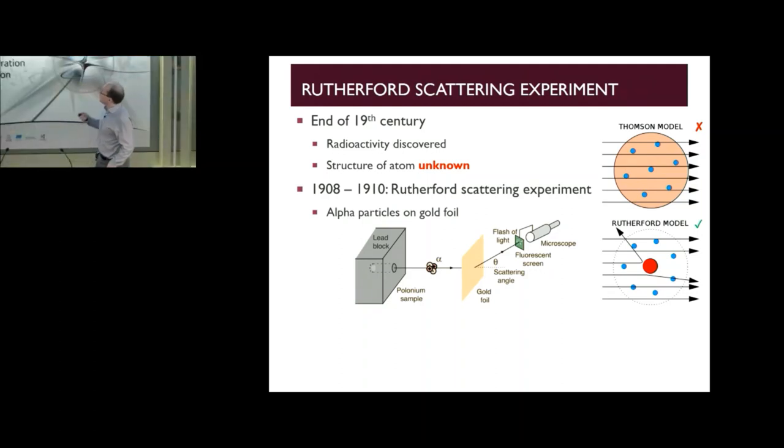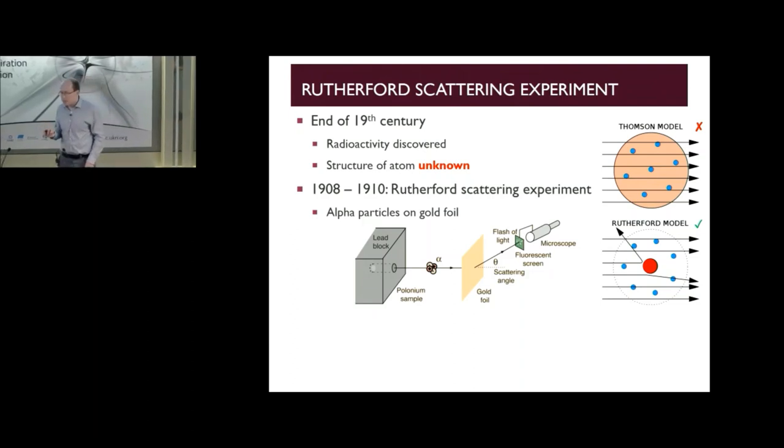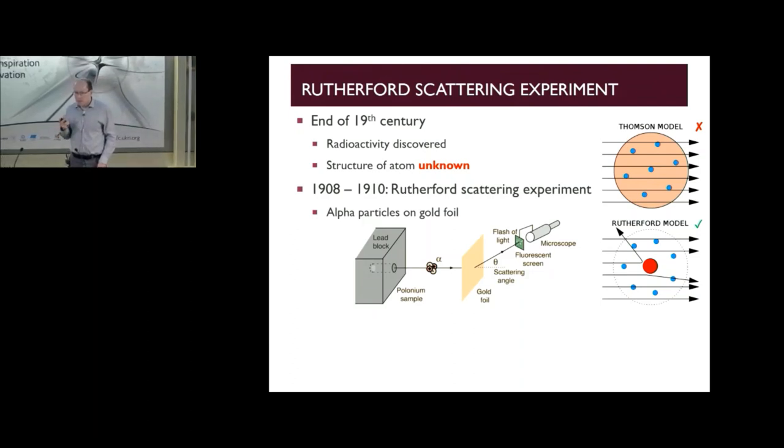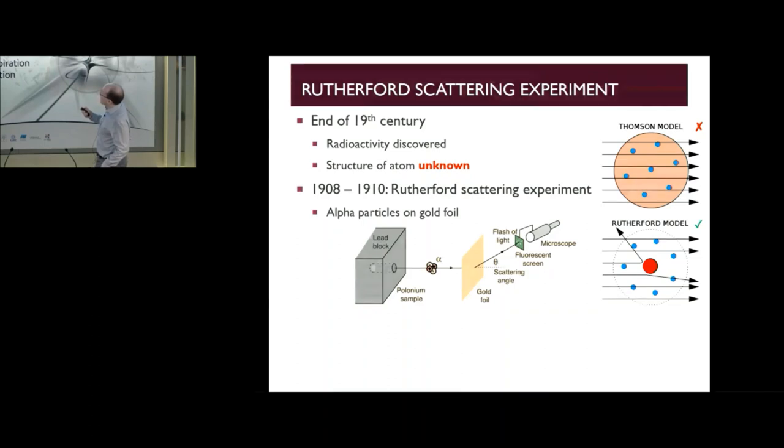When they did this, they found something quite surprising. They found that a small but significant fraction of the time, the alpha particles were scattered back towards the original source through an extremely large angle. Based on this they managed to deduce that the atom internally must be made up of a very dense positively charged core that contains most of the mass of the atom, surrounded by a diffuse cloud of negative charge.